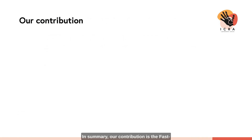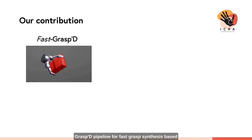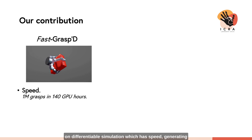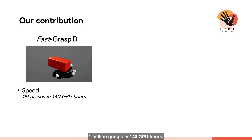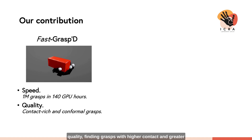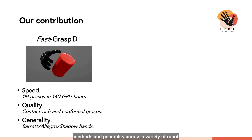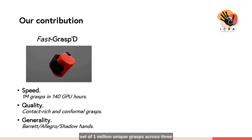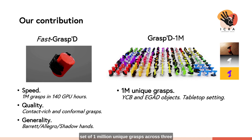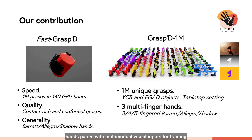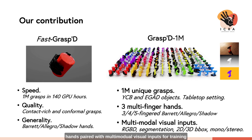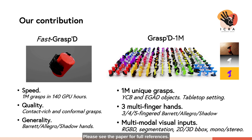In summary, our contribution is the FastGrasp pipeline for fast grasp synthesis based on differentiable simulation, which has speed — generating 1 million grasps in 140 GPU hours — quality — finding grasps with higher contact and greater stability than competing gradient-free and gradient-based methods — and generality across a variety of robot hands. The resulting Grasp-1M dataset contains 1 million unique grasps across three hands paired with multimodal visual inputs for training vision-based robotic grasping. Please see the paper for full references.